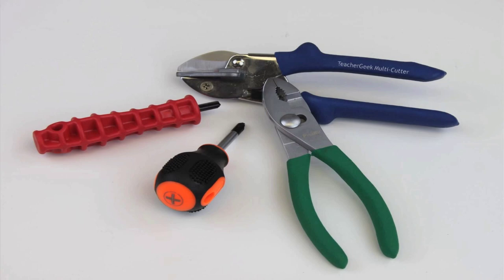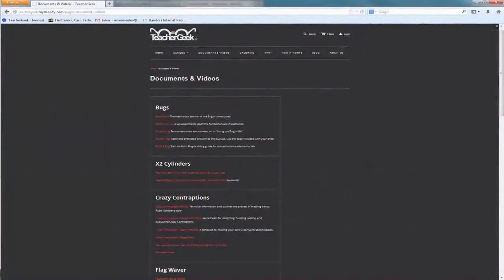For this kit you will need a pair of Teacher Geek multi-cutters, a Teacher Geek reamer, a number two Phillips head screwdriver, and a pair of pliers are optional. Components and free documents for this activity are available at teachergeek.com.